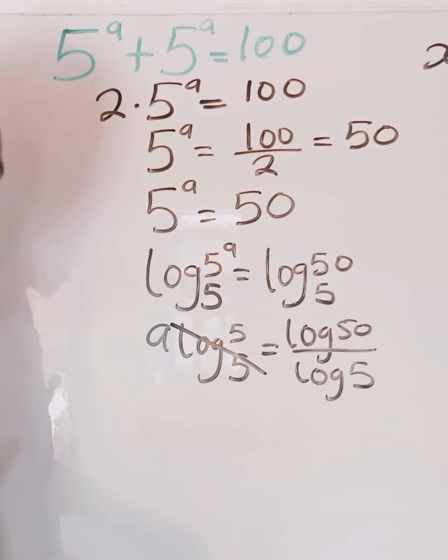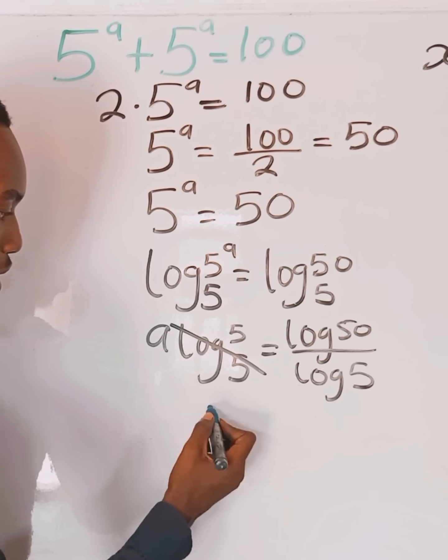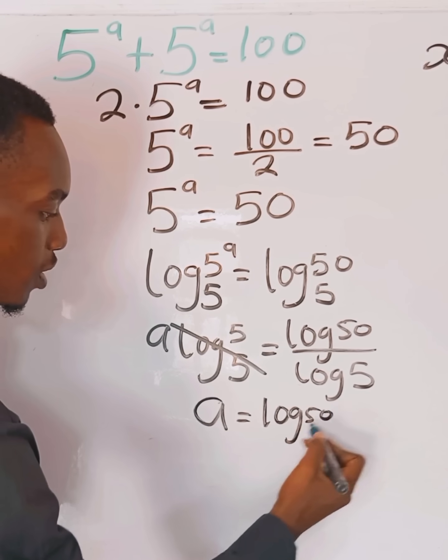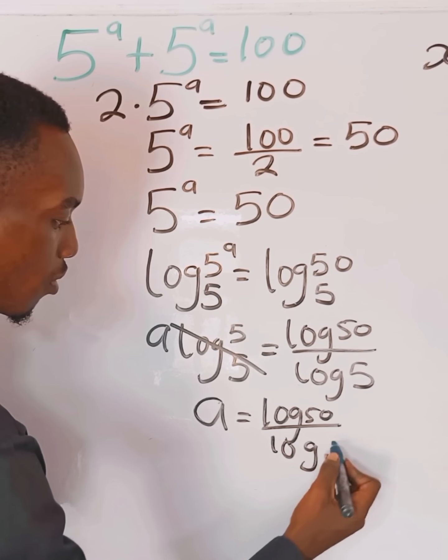So we can have log 50 divided by log 5. The log base 5 of 5 cancels out. Therefore, a would be equal to log 50 divided by log 5.